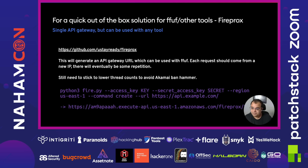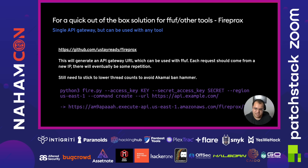If you're going after an individual target, I recommend using something called Fireprox. It takes a URL and generates an API gateway URL you can use for all your fuzzing. You provide a URL like api.example.com and it generates a new API gateway URL you can use with all your existing tools for brute forcing and testing. This is great because it's tool-agnostic — you don't need Burp Suite or anything complex. Do be mindful of thread count because you can still get rate limited even with fairly unique IPs.